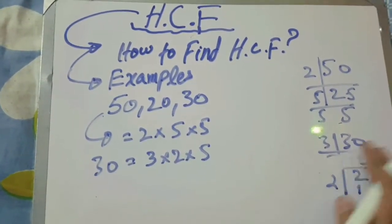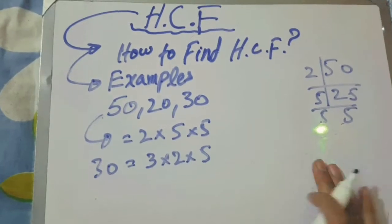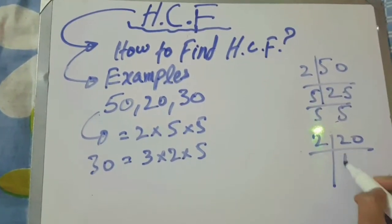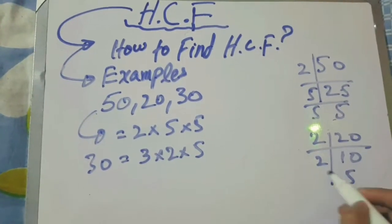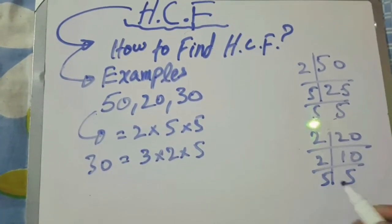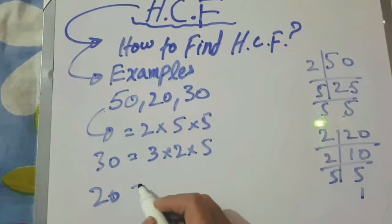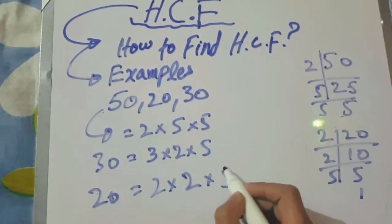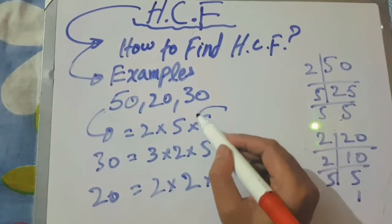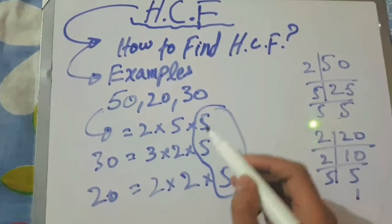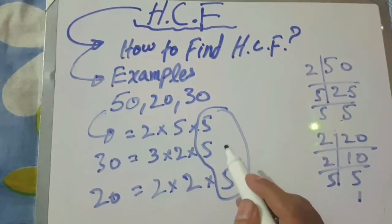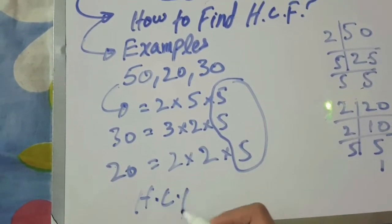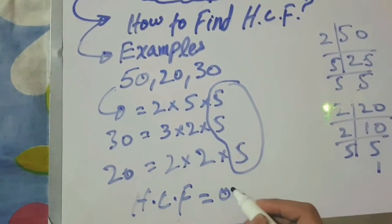For 20: 2 tens are 20, 2 fives are 10, 5 ones are 5. So factors of 20 are 2 multiplied by 2 multiplied by 5. Taking 5 as the common factor, only 5 is appearing in all three numbers. So the Highest Common Factor is 5.